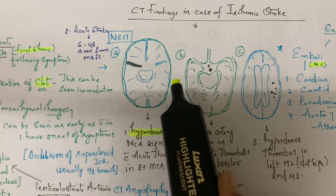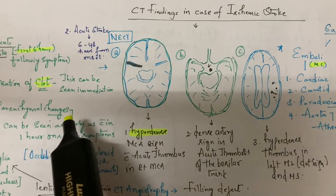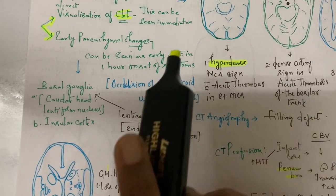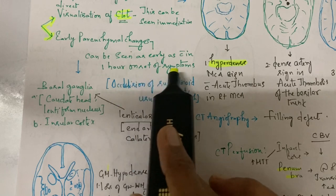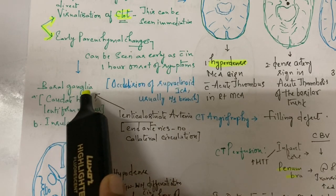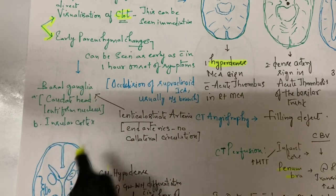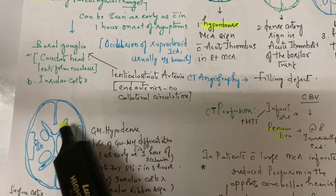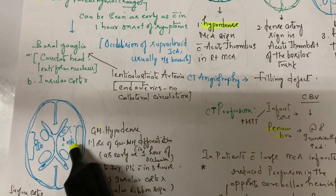Then there are early parenchymal changes. They can be seen as early as within one hour from onset of symptoms in the basal ganglia: caudate head, lentiform nucleus, globus pallidus, and putamen. It's also seen in the insula cortex.